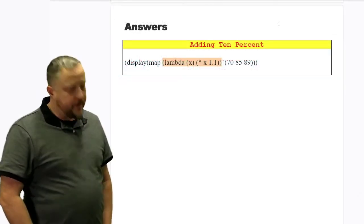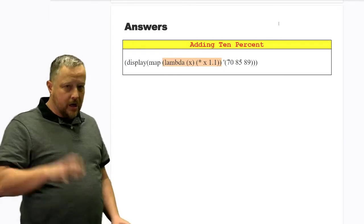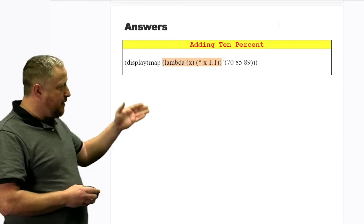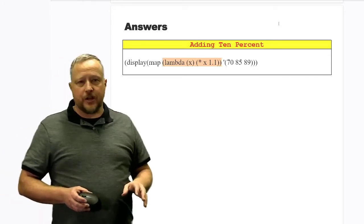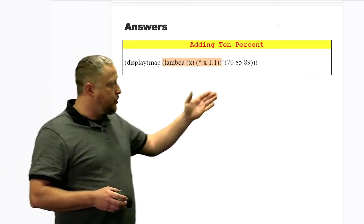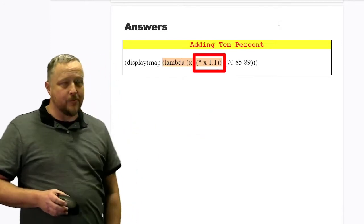Here is your answer for the lambda version of the mapping and then applying our 10% to it. In either version that you had, lambda or non-lambda version, you've got to have this portion of multiplying x times 1.1. You've got to have that somewhere.